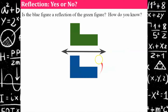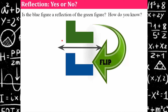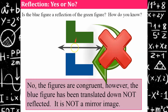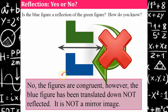Try this one: Is the blue figure a reflection of the green figure? The answer is no, because even though they are congruent, the blue figure has been translated — slid down vertically. There was no reflection. If you folded on the line of reflection, it would not overlap because the long side is very close to the line of reflection on one figure but much further away on the other.